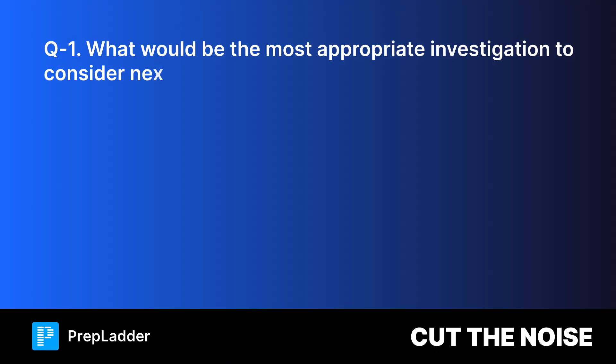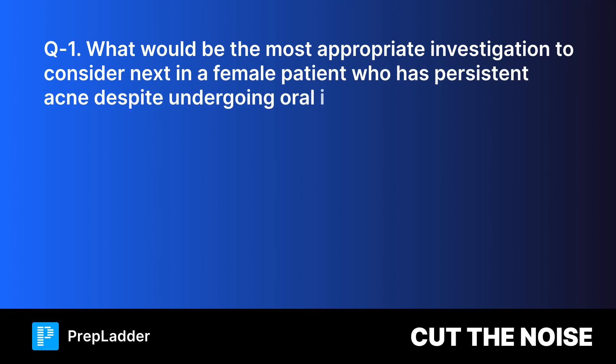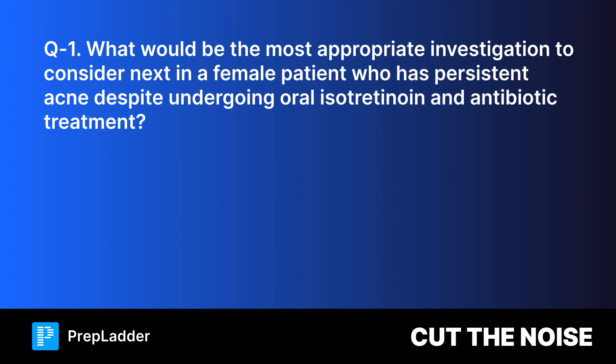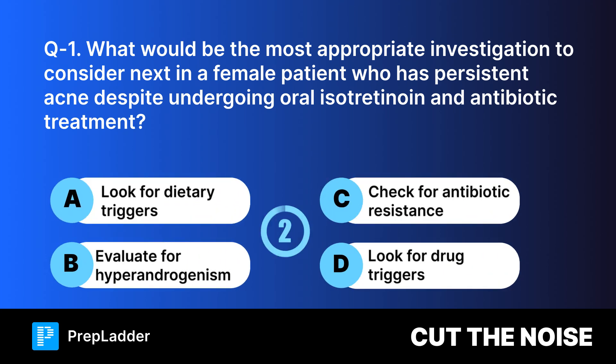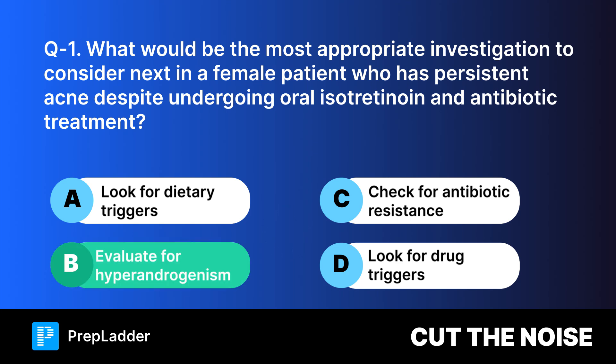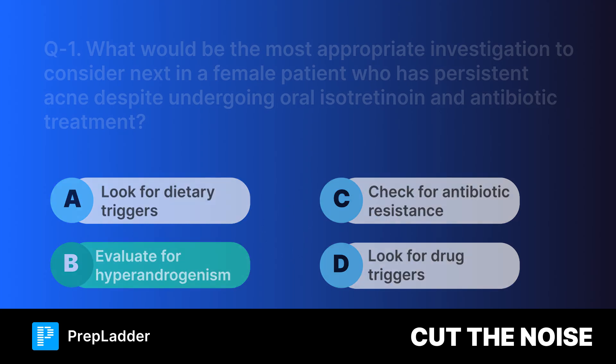Question 1: What would be the most appropriate investigation to consider next in a female patient who has persistent acne despite undergoing oral isotretinoin and antibiotic treatment? The correct answer is evaluate for hyperandrogenism.